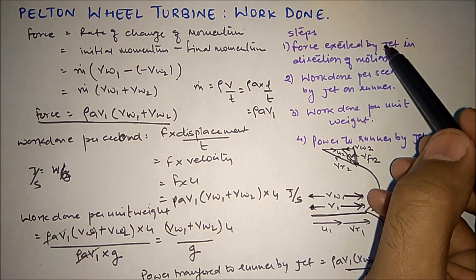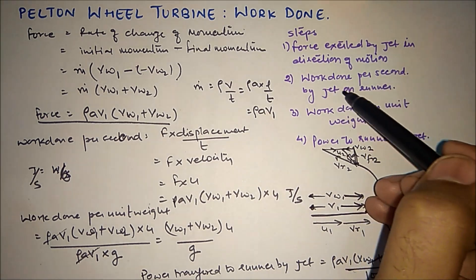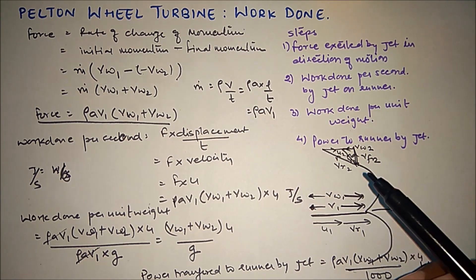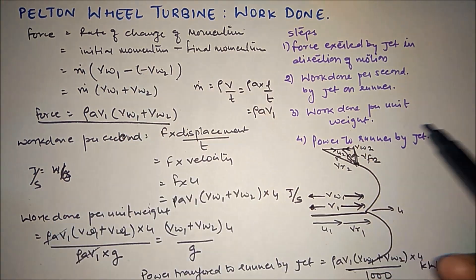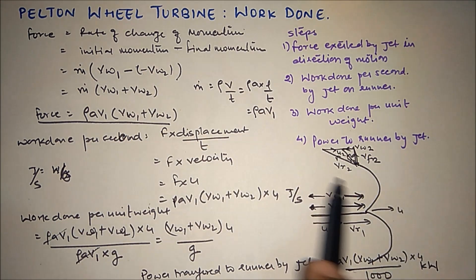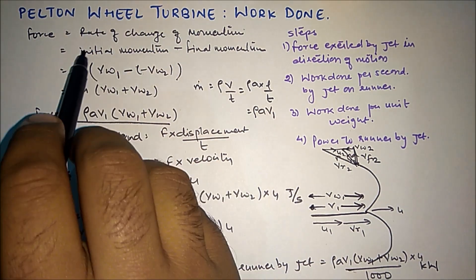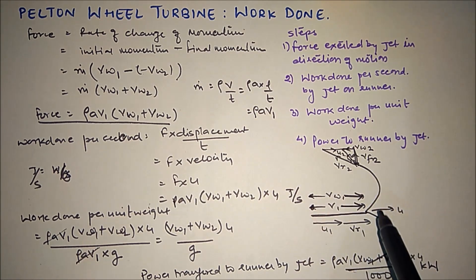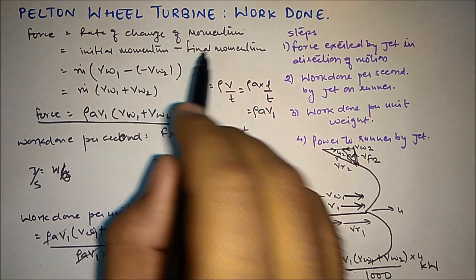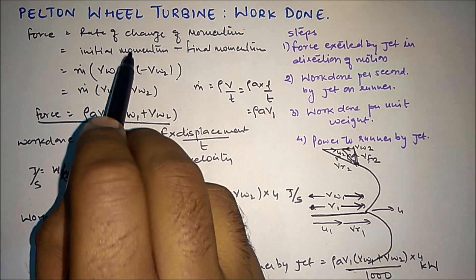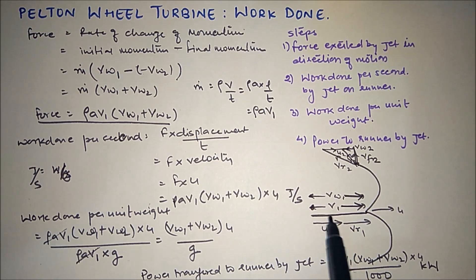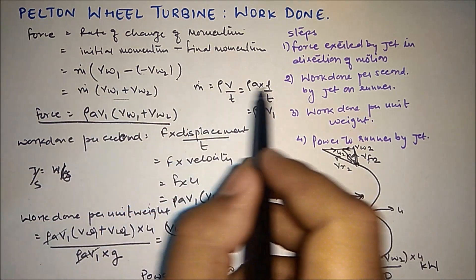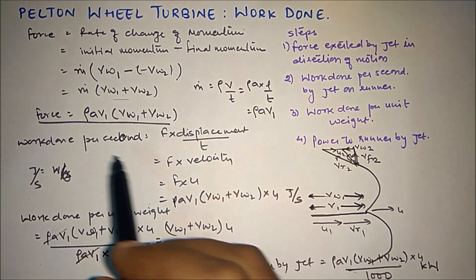To summarize the steps: first, find the force exerted by the jet in the direction of motion; then work done per second by the jet on the runner; then work done per unit weight; then power to the runner. The velocity triangle is used to determine the direction of Vw2, which is opposite to the direction of blade movement. Force is rate of change of momentum by Newton's second law — mass flow rate times (Vw1 − (−Vw2)) = rho*A*V1*(Vw1 + Vw2).